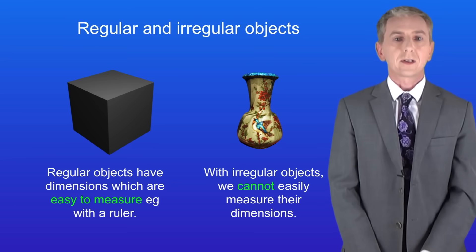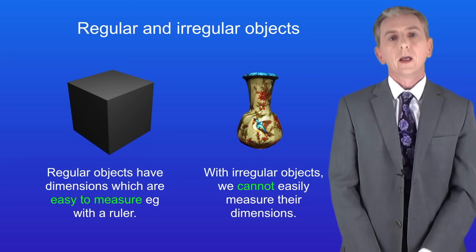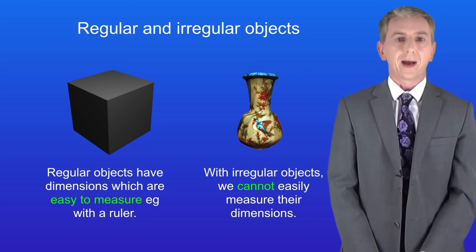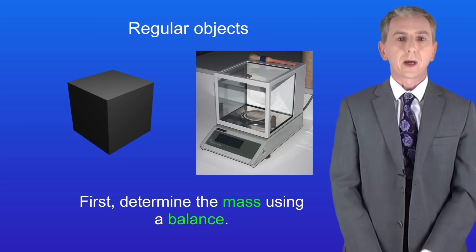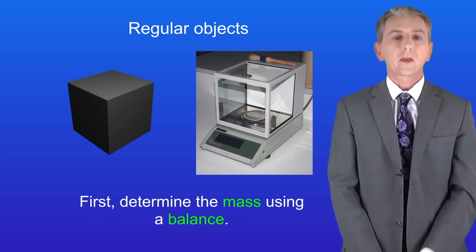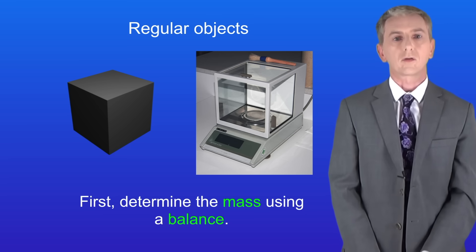Remember that the density is the mass divided by the volume so first we need to determine the mass. We can do that easily by using a balance such as this one. Imagine that the cube has a mass of 0.5 kilograms.